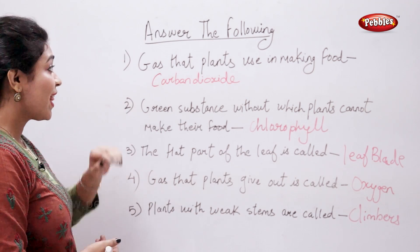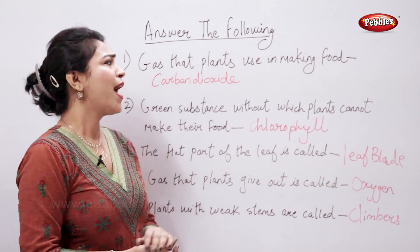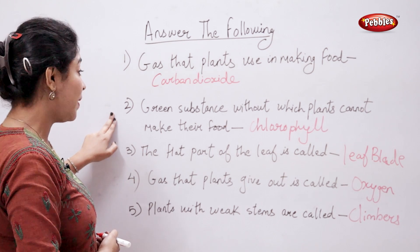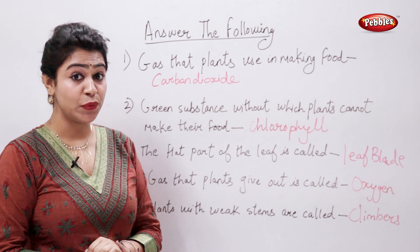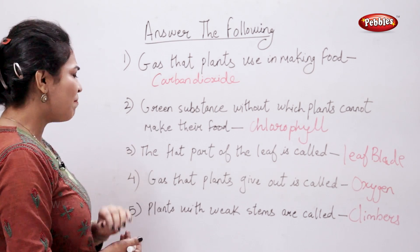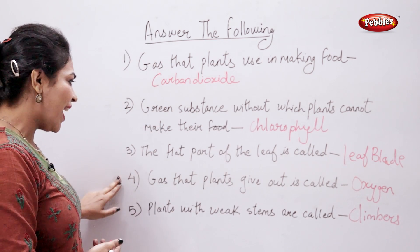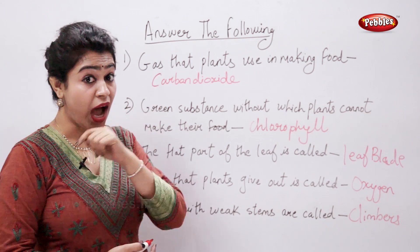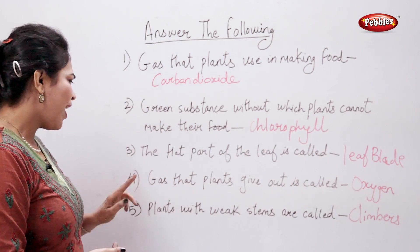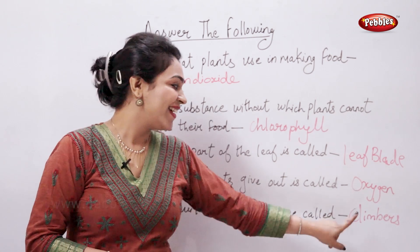Let's review: the gas that plants use in making food is carbon dioxide. The green substance without which plants cannot make their food is chlorophyll. The flat part of the leaf is called leaf blade. The gas that plants give out is called oxygen. Plants with weak stems are called climbers.